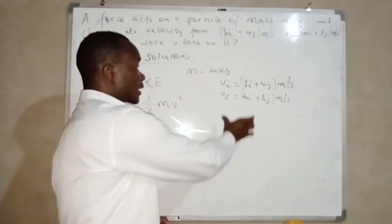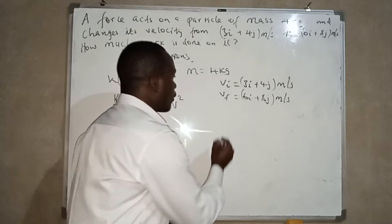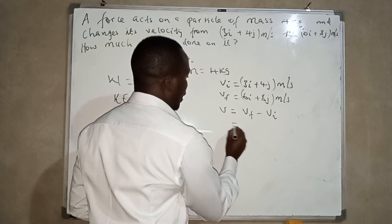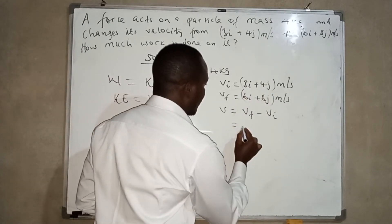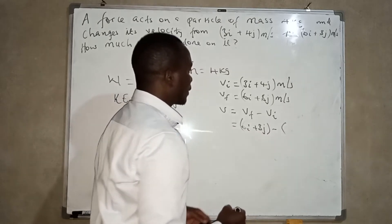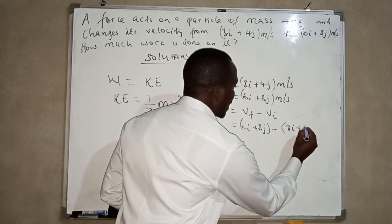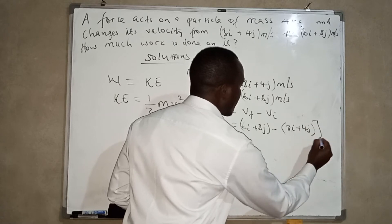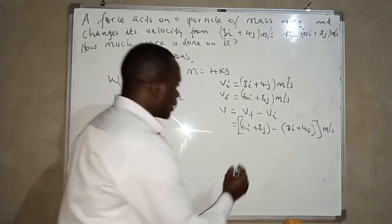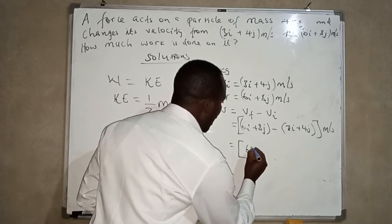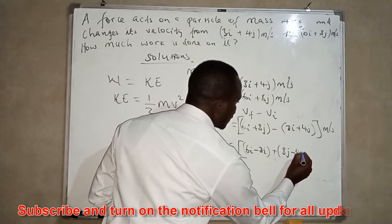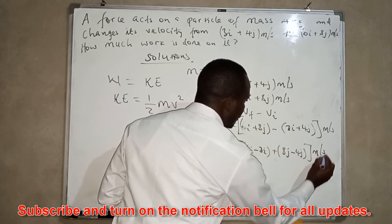V, or the resultant velocity, or the change in the velocity, will be v equals v f minus v i. So here we have 6i plus 8j minus 3i plus 4j. We are going to have 6i minus 3i plus 8j minus 4j meters per second.